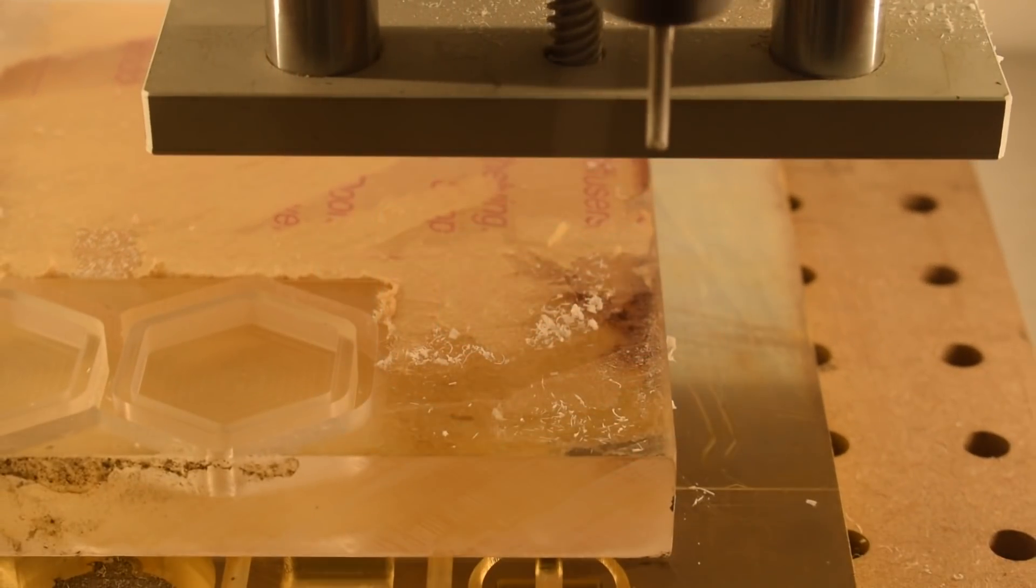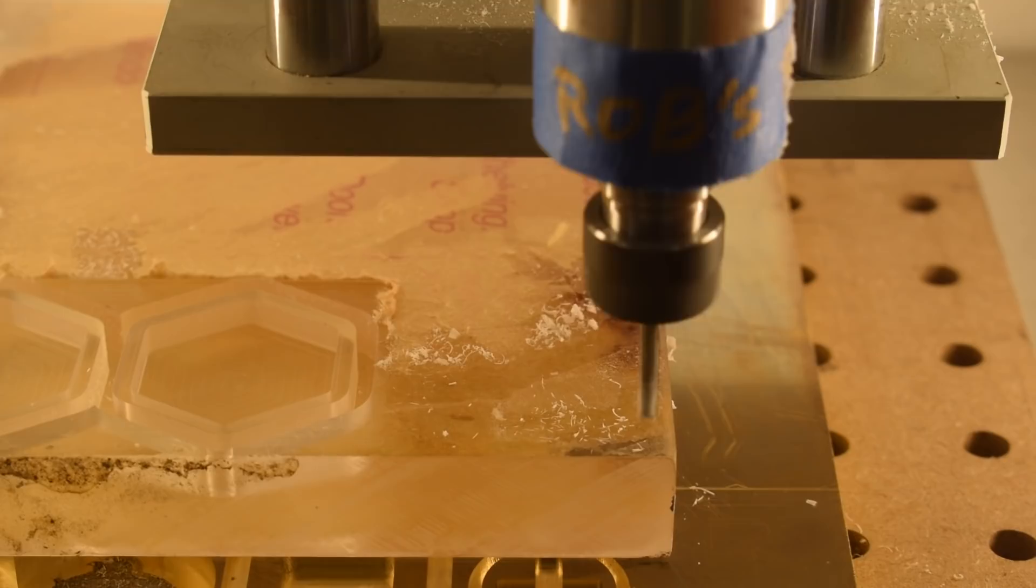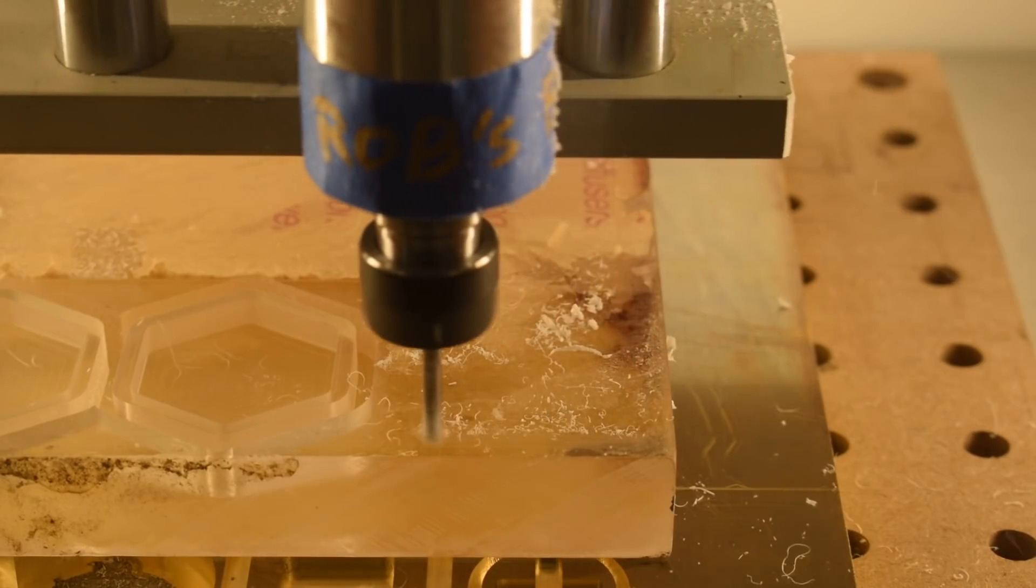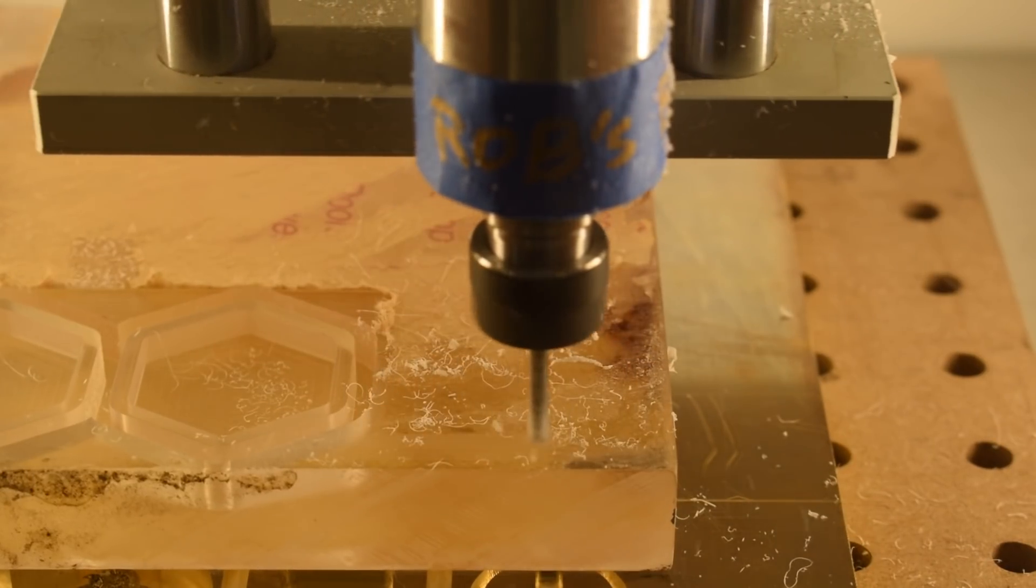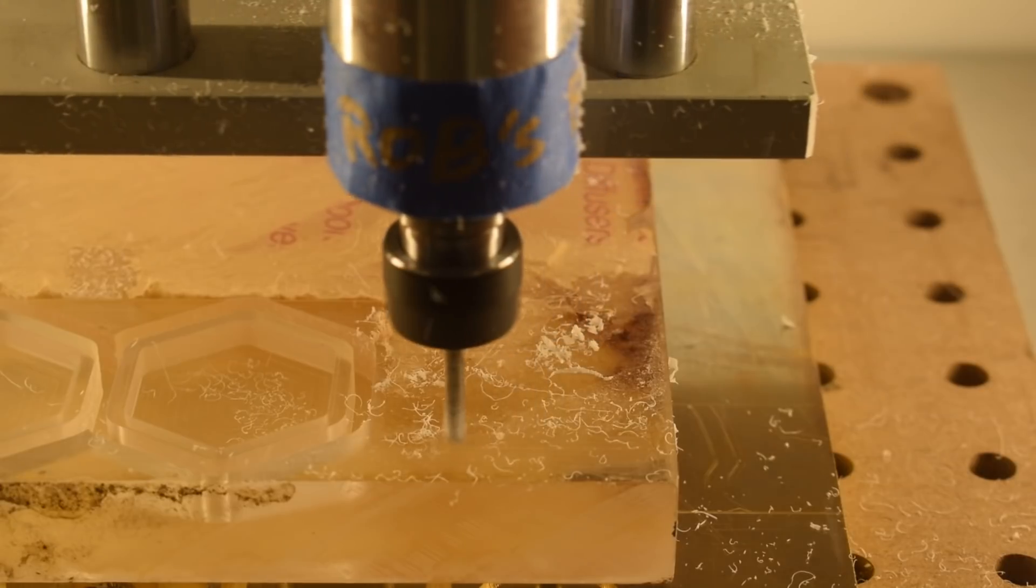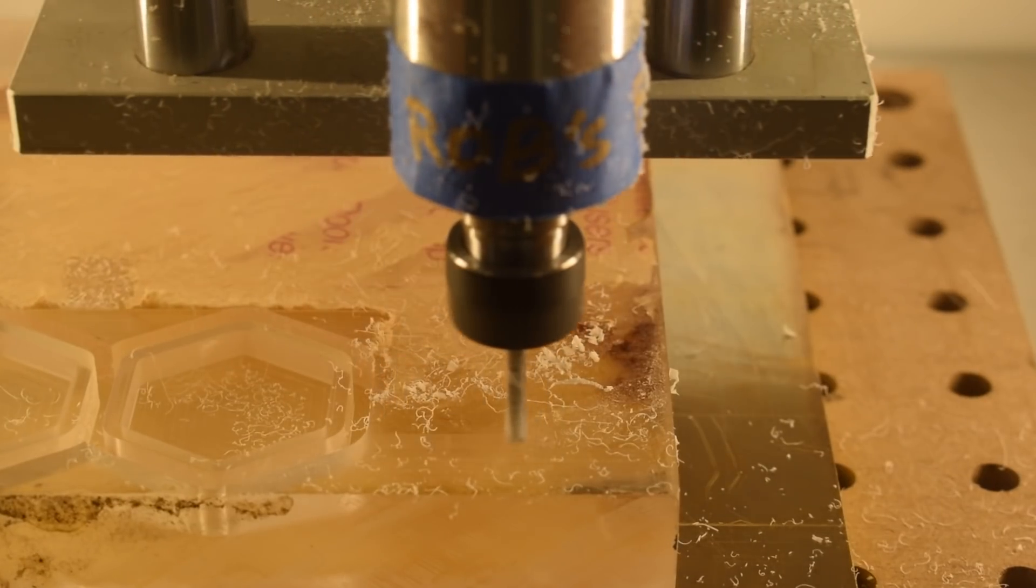Hey guys, Winston at Carbide3D here. A really common and useful plastic is acrylic, and if you're not blessed with a CO2 laser in your shop, a CNC is probably your best bet at turning a slab of this stuff into something useful.